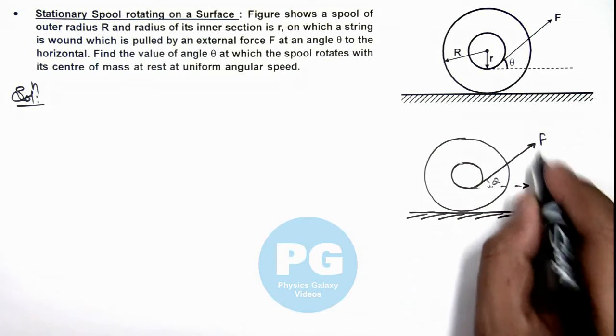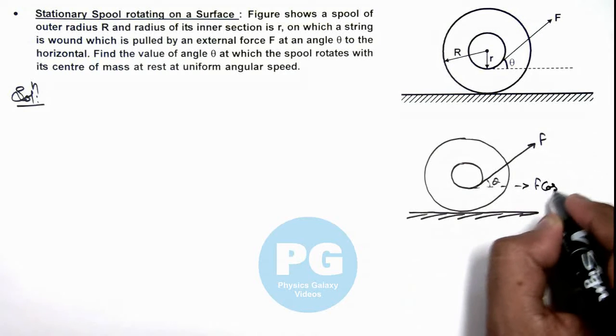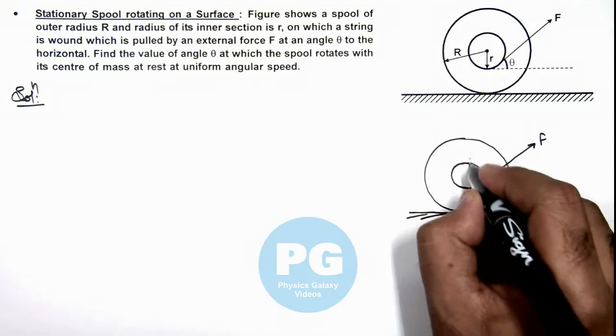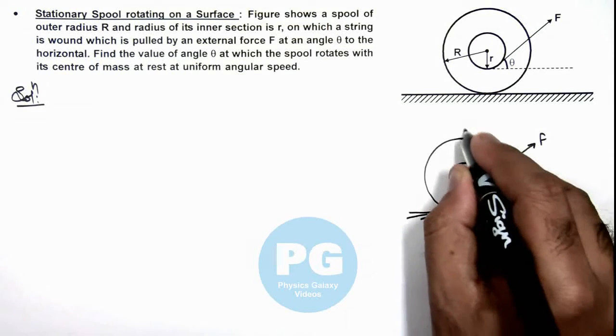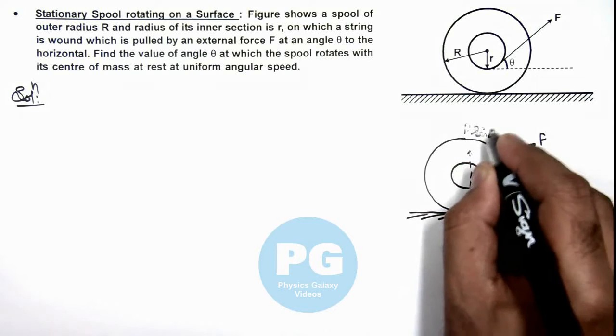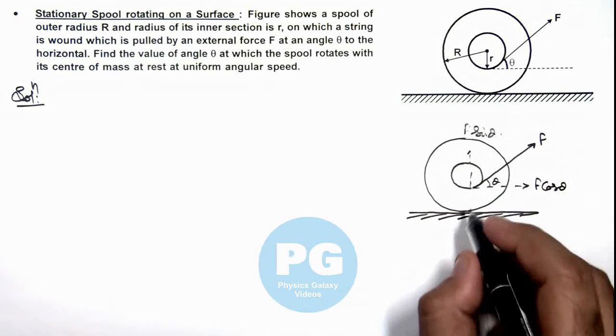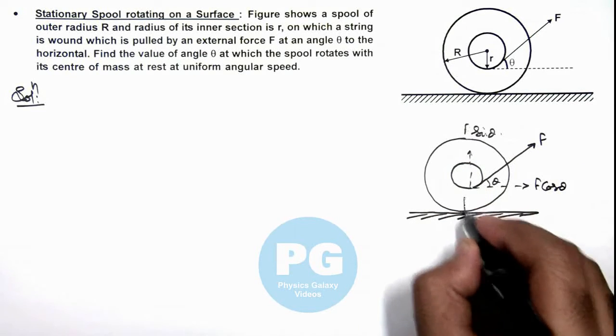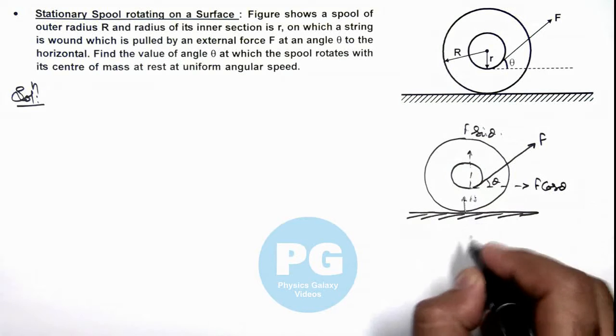The horizontal component of this force will be F cos theta and vertical component will be F sin theta. And in this situation mg is acting in downward direction and a normal reaction will act on it in upward direction.